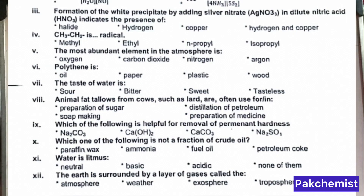MCQ number 3 involves AgNO3 and HNO3. Which one is most abundant in the atmosphere? Which type of acid can be found in the atmosphere? That is Nitrogen.